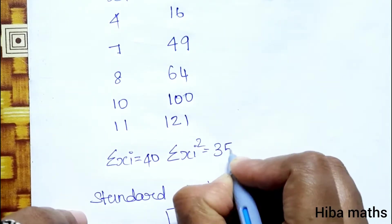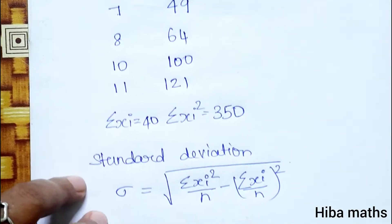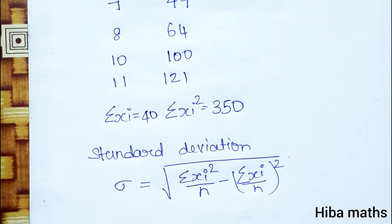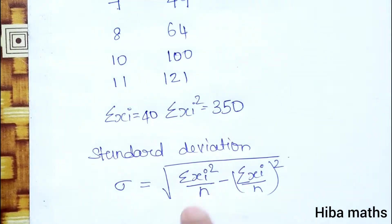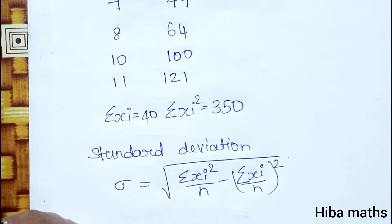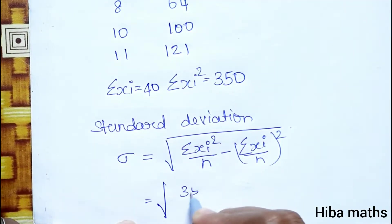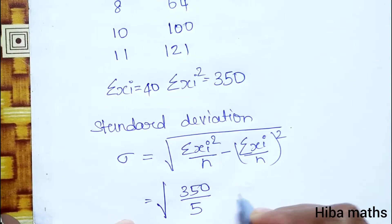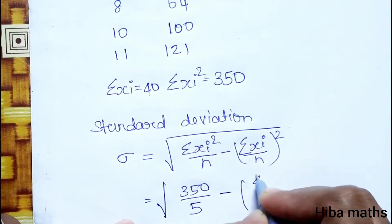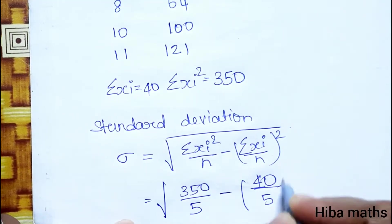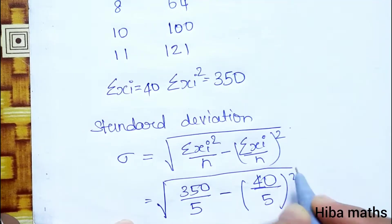The sum of Xi is 40 and the sum of Xi² is 350. Using the standard deviation formula: standard deviation equals the square root of summation of Xi² by N minus summation of Xi by N whole square. Substituting: root of 350 by 5 minus 40 by 5 whole square.